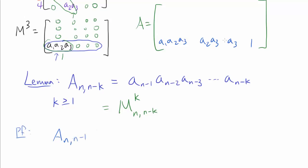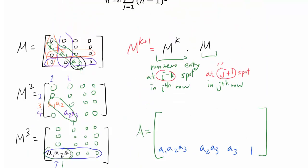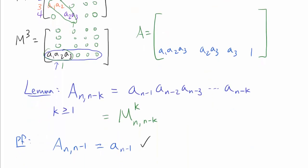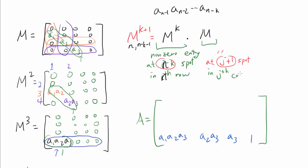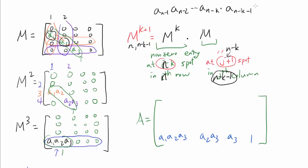To prove this more formally with a second lemma: for k greater than or equal to 1, A of N at position (N, N minus k) equals A sub(N-1) times A sub(N-2) times ... times A sub(N-k). The base case: the N minus 1st entry in the Nth row is A sub(N-1) by definition, since M has A3 (or A sub N minus 1) in row N, column N minus 1. For the inductive step, the (N, N minus k minus 1) entry in M to the k+1 picks up the additional factor A sub(N minus k minus 1), completing the induction.